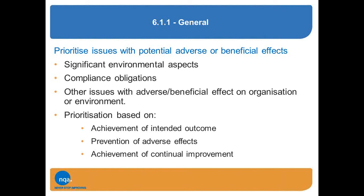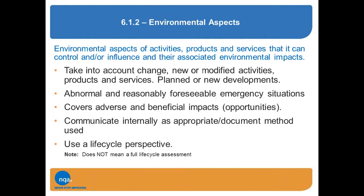We then need to prioritise these issues — looking at significant risks, which the standard still calls significant aspects. We're looking at prioritising issues taking into account compliance obligations, other issues that can affect our environment or that we can affect the environment with, and the prioritisation has to be based on achievement of the intended outcome, prevention of adverse effects and ensuring continual improvement. The standard does not say there is a requirement for a documented risk management process — it's entirely up to you how you do this.